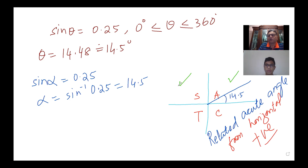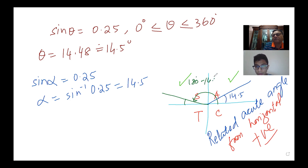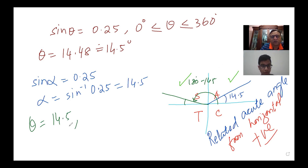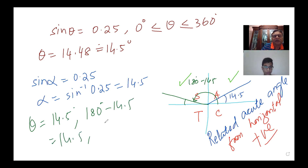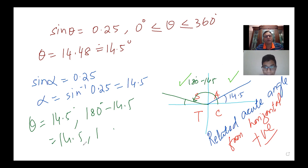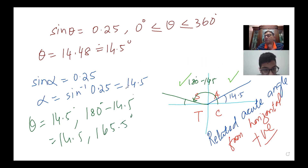Since sine is also positive in quadrant two, we have another solution. That angle will be 180° − 14.5° = 165.5°. So the values of θ are 14.5° and 165.5°. Now let's make it slightly more difficult: sin θ = −0.75 within the domain 0 to 360 degrees. If you use the calculator, you get −48.6°, which is not in our domain — so the calculator gives you the wrong answer.